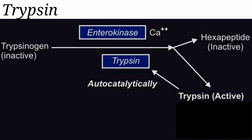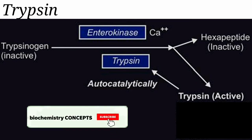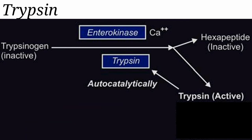Trypsin is a proteinase secreted as the inactive zymogen form trypsinogen, which is activated to form active trypsin. Enterokinase, which is a glycoprotein enzyme, converts trypsinogen into a hexapeptide and active trypsin. The hexapeptide is the inactive form. This active trypsin itself can convert trypsinogen into active form by autocatalysis.